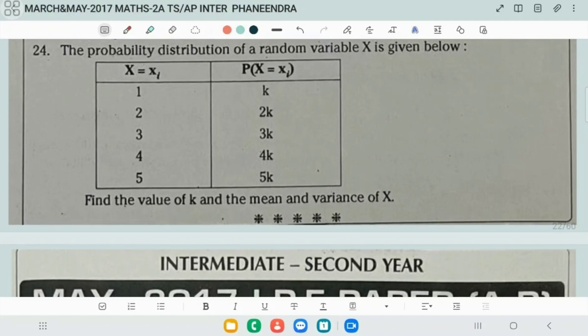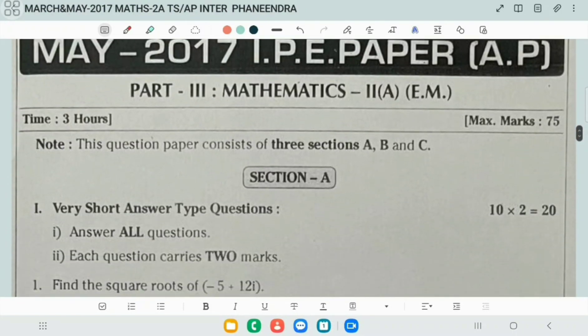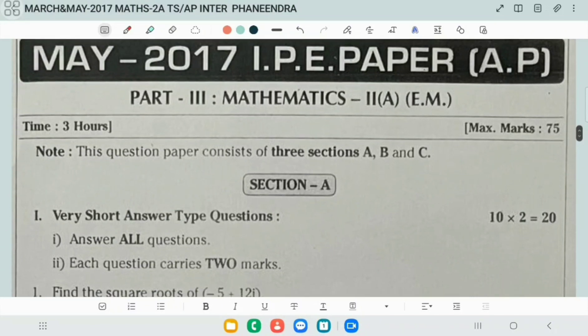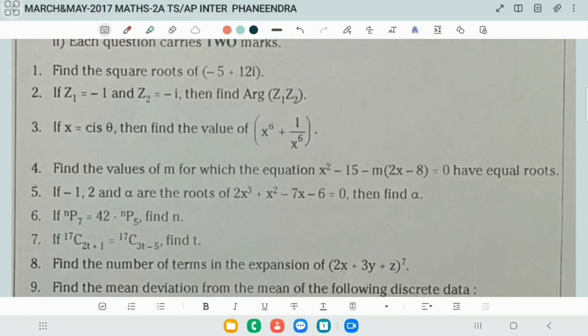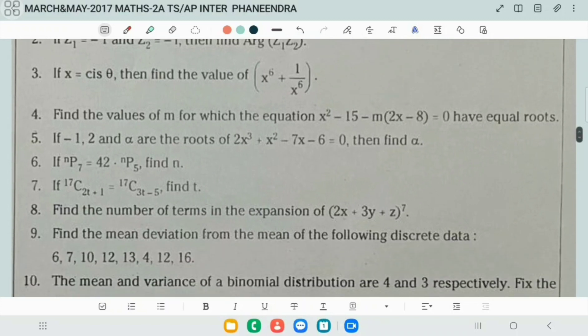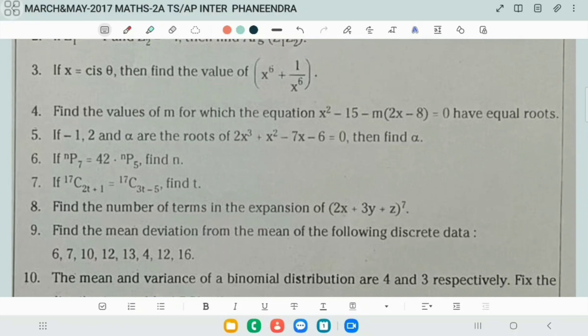Next, May 2017 AP Mathematics 2A paper. Find the square root of minus 5 plus 12i. This is one of the important questions in the two marks of complex numbers. Next, z1 and z2 values are given. They are asking to find the argument of z1 into z2. First multiply these two complex numbers, then apply the argument. Next, x equals cos theta, then find the value of x power 6 plus 1 by x power 6. It's a good question.